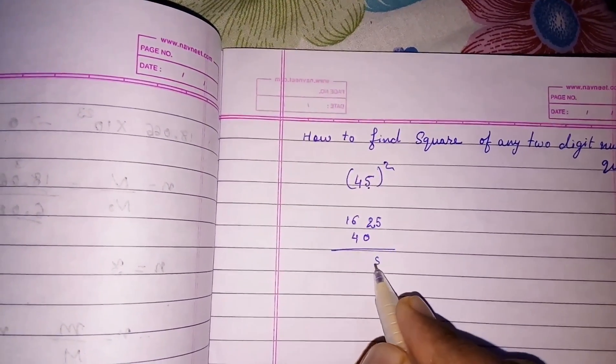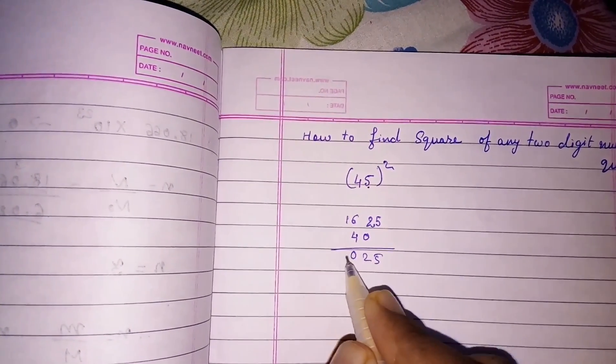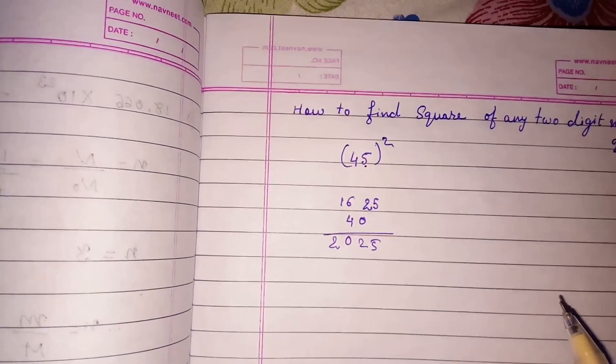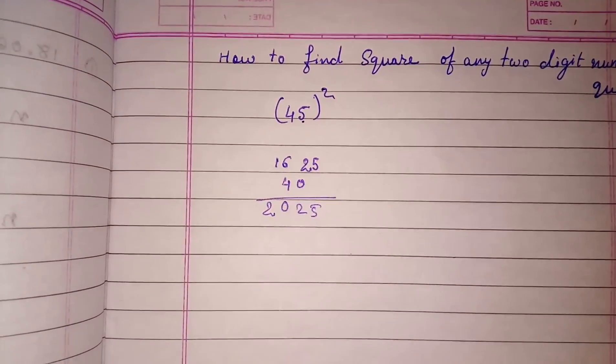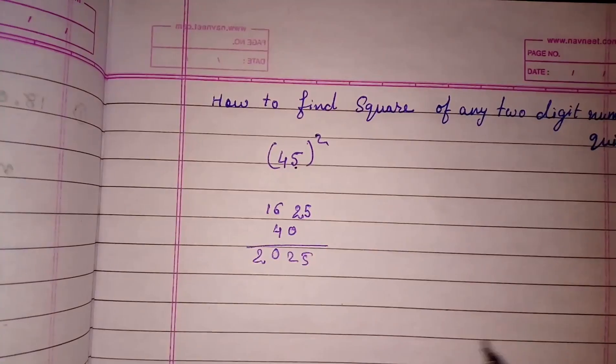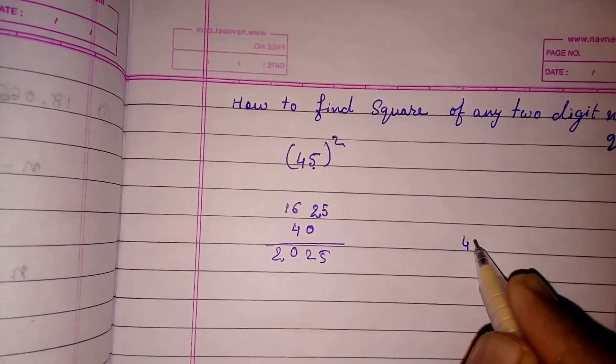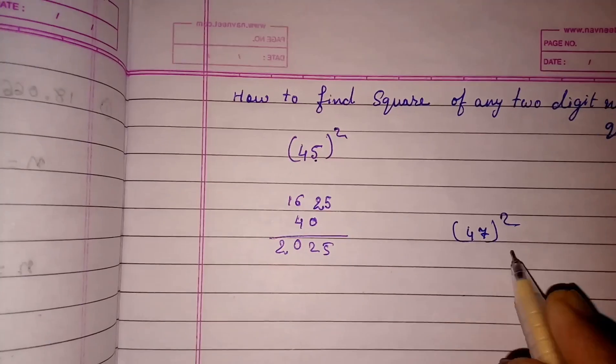Now we have to add this: 5 plus 0 is 5, 2 plus 0 is 2. This way we can find it quickly. Now I am doing it quickly so that you come to know.